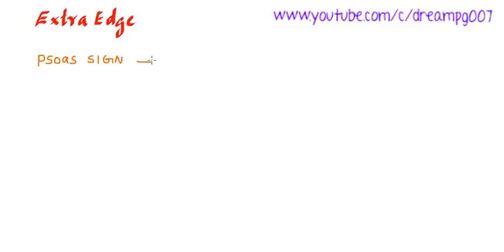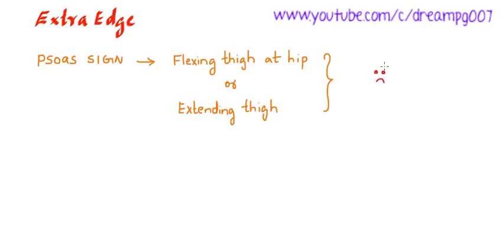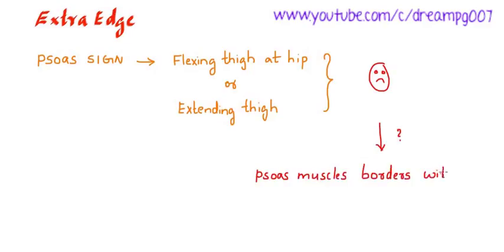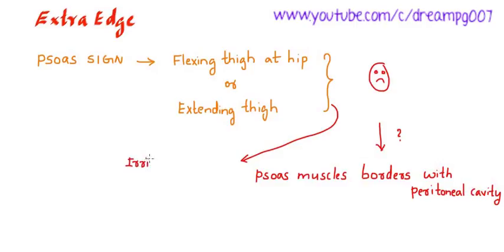Let's look into some other signs seen in appendicitis. One is the psoas sign. Here, flexing the thigh at the hip or extending the thigh will produce pain. Why does pain occur while flexing the psoas muscle? Because the psoas muscle borders with the peritoneal cavity, so when movement occurs at the hip, this muscle will irritate the inflamed tissue. That's the psoas sign.